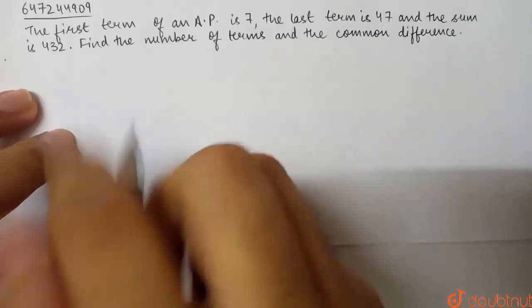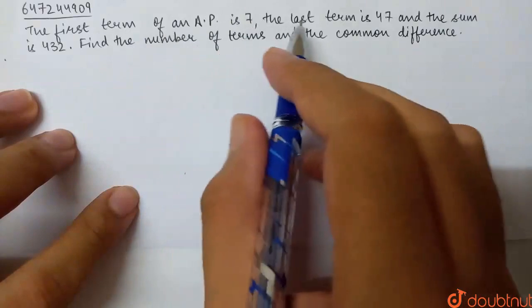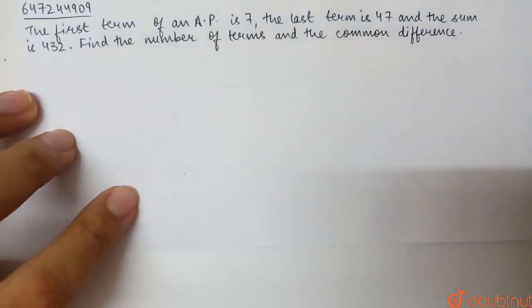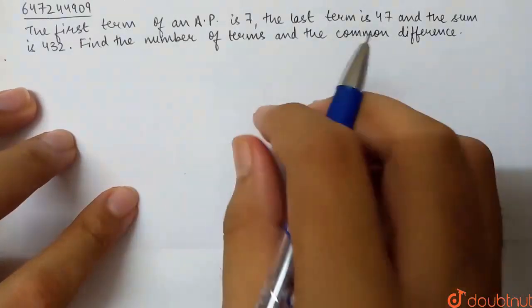In this question, the first term of an AP is 7, the last term is 47, and the sum is 432. Find the number of terms and the common difference.